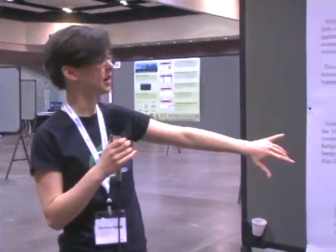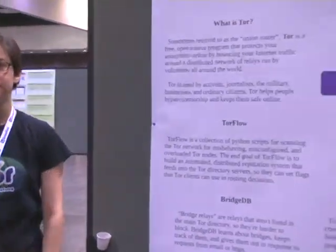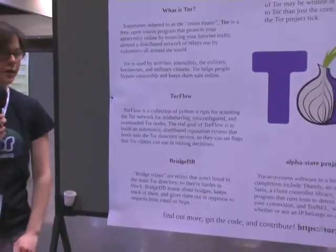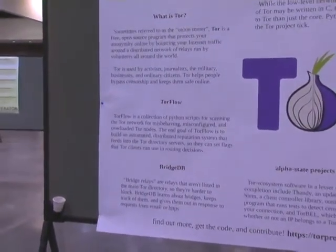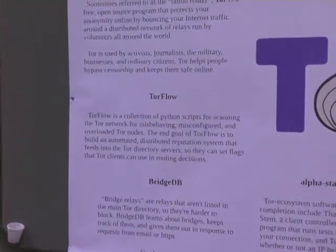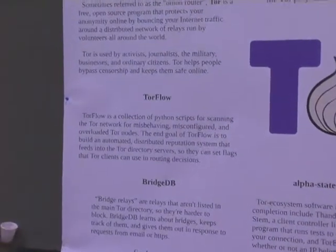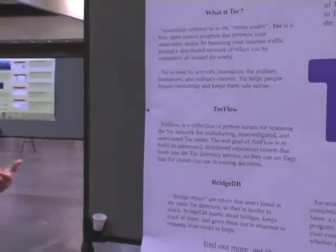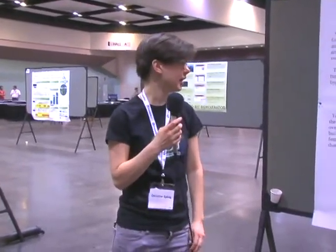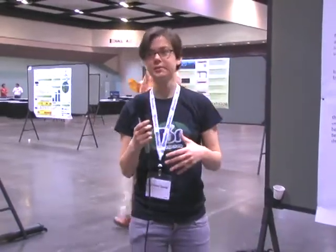On the left side are some newer projects that could definitely use a lot of new contributors. One is Torflow, which is a collection of Python scripts used to scan the Tor network for misbehaving nodes, misconfigured nodes, and nodes that have too much traffic being routed to them compared to all the other nodes. The end goal is to build a reputation system so that Tor clients can use it to be smarter about routing their traffic.